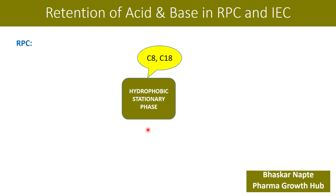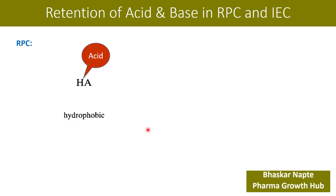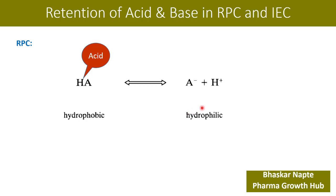Let's say you have an acid with the formula HA. If HA is in a non-ionic state, it will be in a hydrophobic state. The moment the acid dissociates into its anion, liberating a proton, this anion A⁻ becomes slightly hydrophilic in nature.